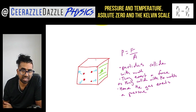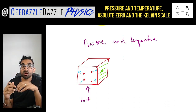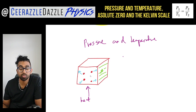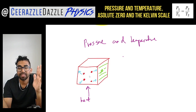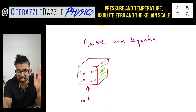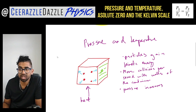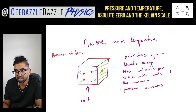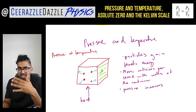Gases exert a pressure due to particle collisions, but what happens if you increase the temperature of the gas? If we heat up the gas, the particles gain kinetic energy and travel faster, so there will be more collisions per second with the walls of the container, and therefore the pressure increases. We can therefore say that pressure is proportional to temperature.